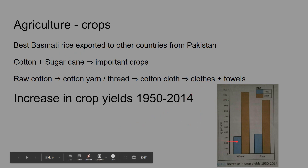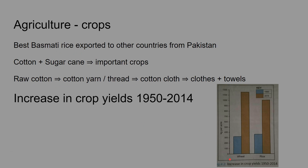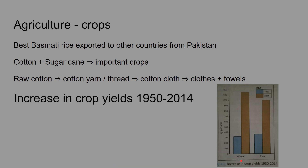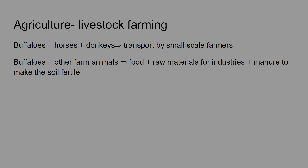This graph shows that wheat and rice yields grew from 1950 to 2014. There was an increase in crop yields because Pakistan was adopting good agricultural initiatives, protecting agriculture, and using better machinery.